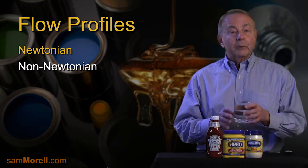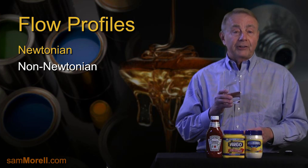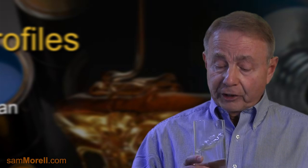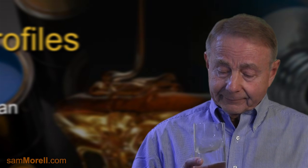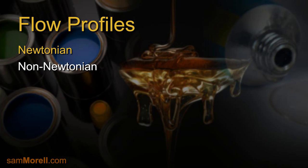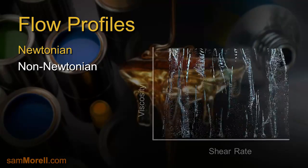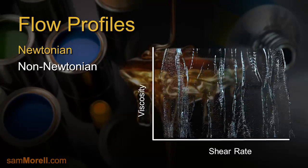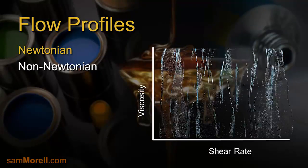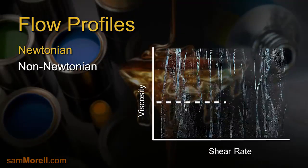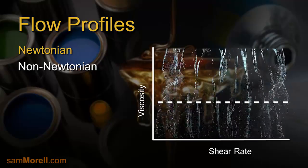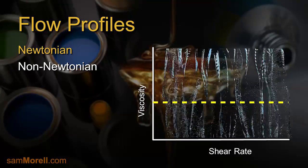Newtonian fluids are liquids whose viscosity does not change with a change in shear rate. Only a small group of fluids exhibit such constant viscosity, and a good example would be water. When we plot viscosity against shear rate, the rheology profile of water exhibits no change in viscosity with higher shear rates, and no change when the shear rate is reduced or removed.